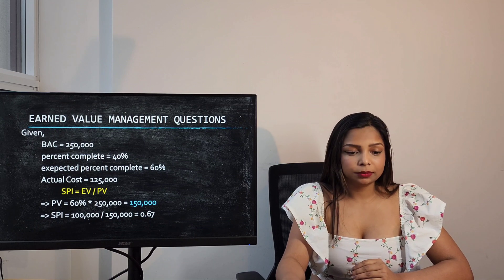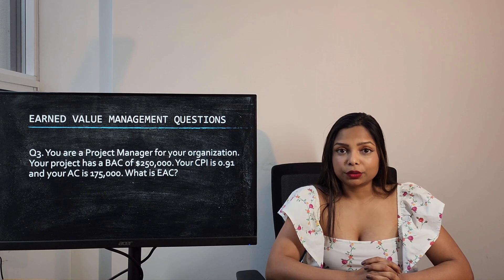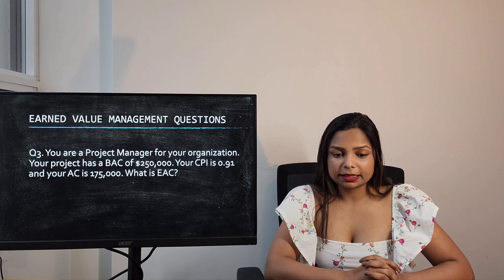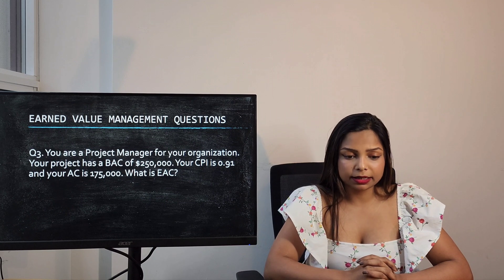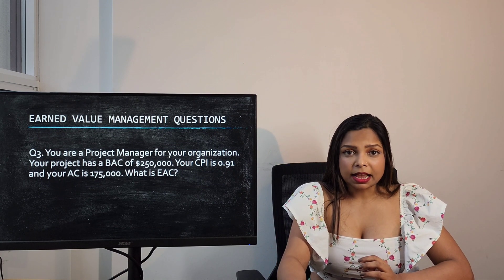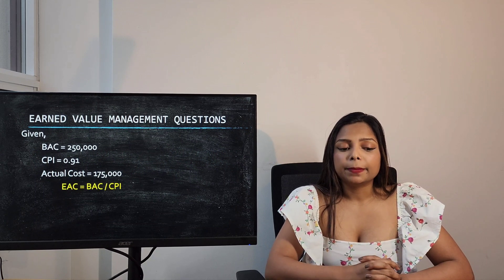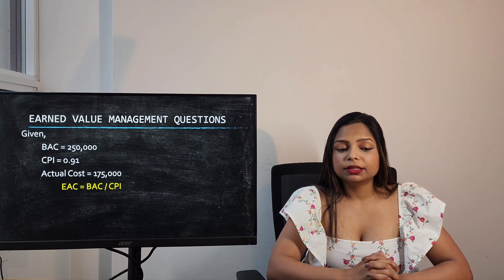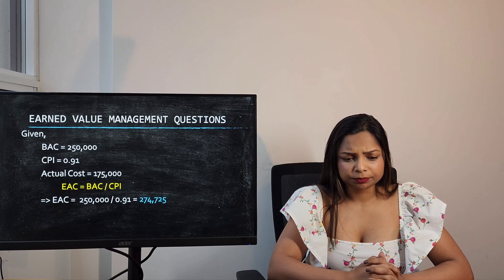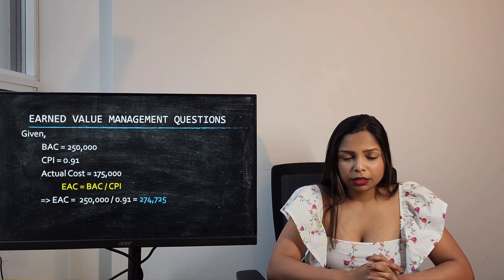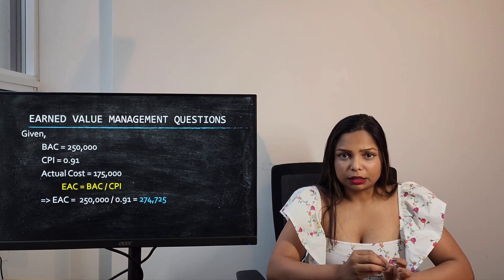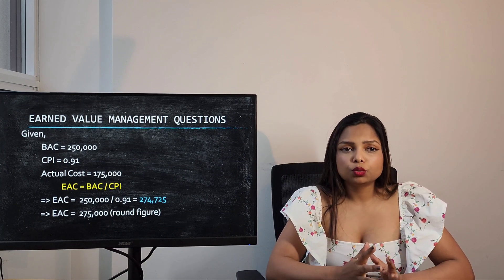Question 3: Your project has a BAC of $250,000, a Cost Performance Index of 0.91, and an Actual Cost of $175,000. What is the Estimate at Completion? Using the standard formula — BAC divided by CPI — $250,000 divided by 0.91 gives approximately $274,725. Rounding this value gives approximately $275,000.